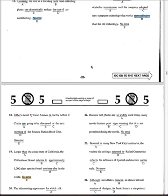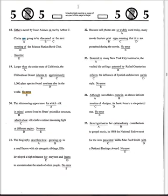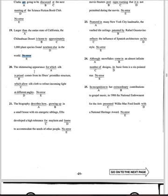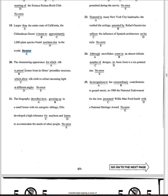This is how I attack my SAT paper. Number 20: 'The shimmering appearance for which silk is known comes from its fiber's prism-like structure, which allows...' — because its structure is singular and 'structure allows,' but it's turning the structure into plural, which is absolutely wrong. I'm going to select blue for that error.